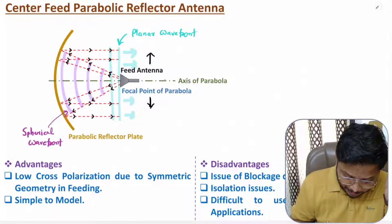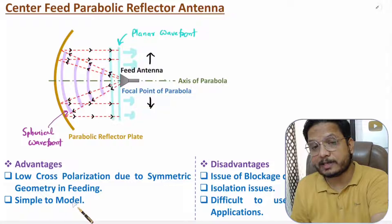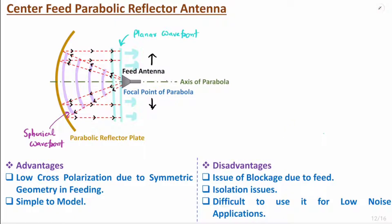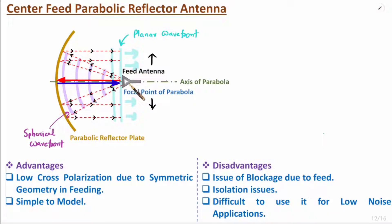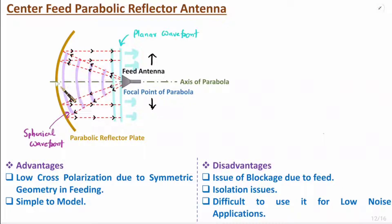It is quite simple to model, but there are essential disadvantages. First is the issue of blockage due to the feed. When the feed transmits EM waves, the waves nearer to the axis of parabola come back to the feed, causing blockage. The waves near the axis of parabola reflect back onto the feed, which is why there is a blockage issue with this structure.